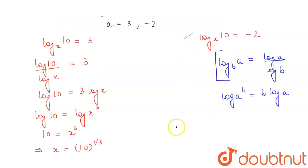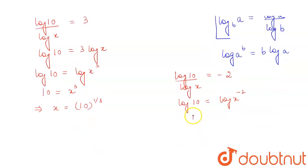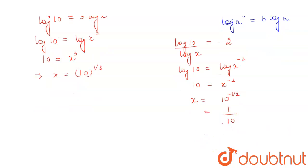Now if we take the second case and apply the property, we will get log of 10 divided by log of x equals minus 2, which gives log of 10 equals log of x to the power minus 2. Now taking antilog we will get 10 equals x to the power minus 2. And this will become x equals 10 to the power minus 1 by 2, which equals 1 upon root 10.